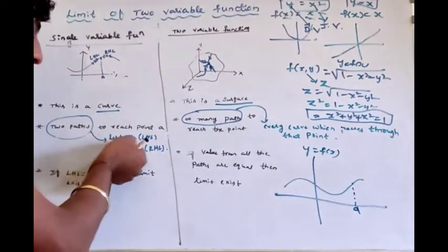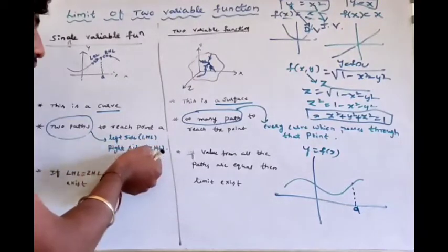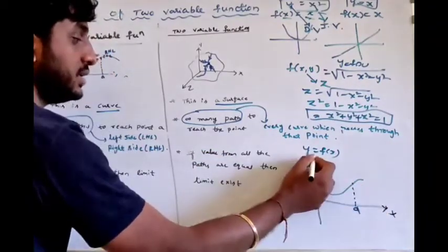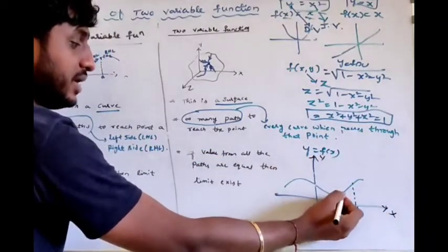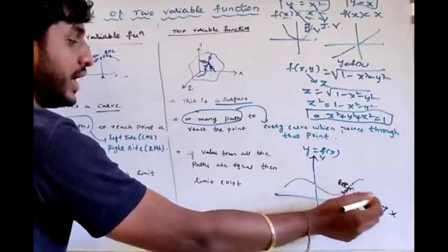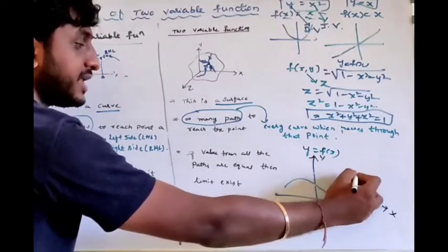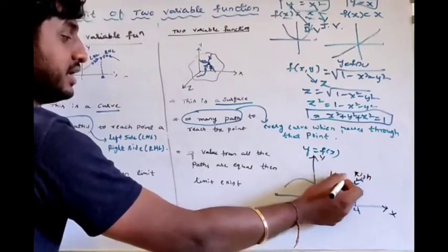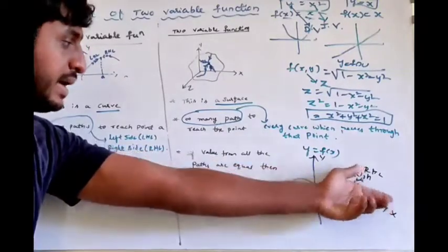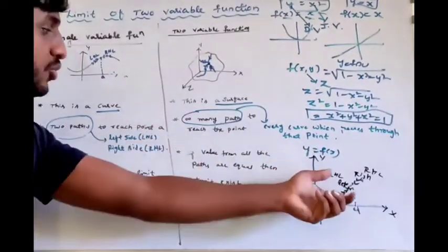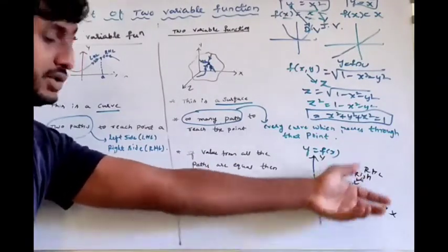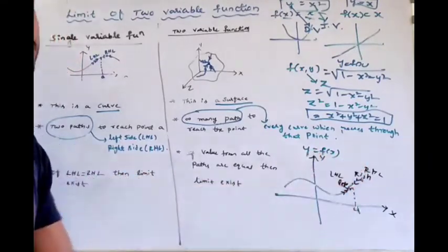We consider two parts — one path is the left side and one path is the right side. Then we have LHL and RHL: left hand limit and right hand limit. Here x approaches point A from the left, and x approaches point A from the right. If LHL equals RHL, then the limit exists. If LHL is not equal to RHL, then the limit does not exist.